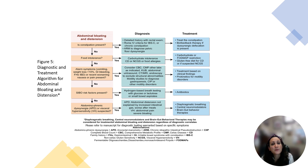We talk about patients with bacterial overgrowth and how breath testing can be very helpful, and antibiotics have been studied and can help patients with abdominal bloating symptoms. And then lastly, we talk about abdominal phrenic dyssynergia and visceral hypersensitivity and how we can bring in our psychologists and gut-directed behavioral therapies to help our patients along with neuromodulators.